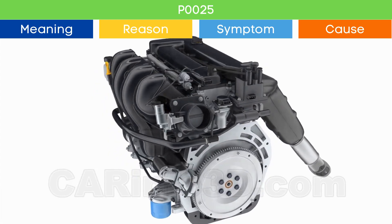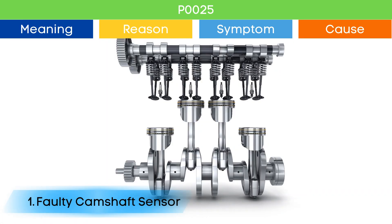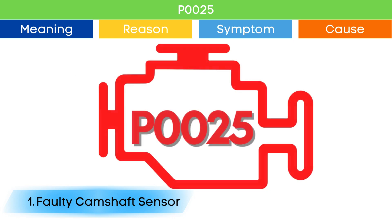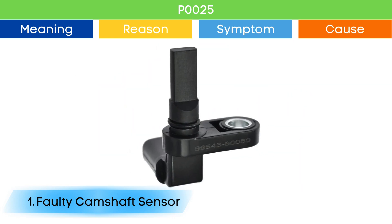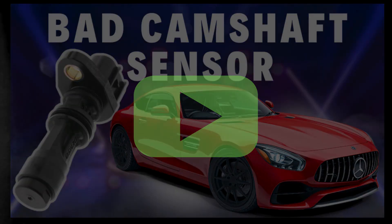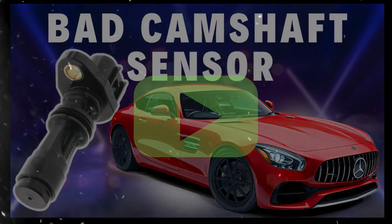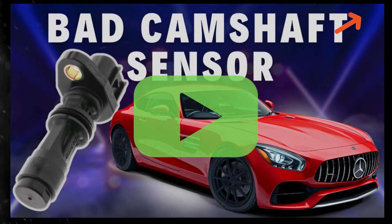Cause number one: bad camshaft position sensor. Due to a malfunction of the camshaft position sensor, the ECU may detect an engine timing error, which may trigger P0025 and other OBD2 codes related to camshaft position sensors, along with symptoms of a bad camshaft position sensor. Check our detailed video to learn more — link in the corner.